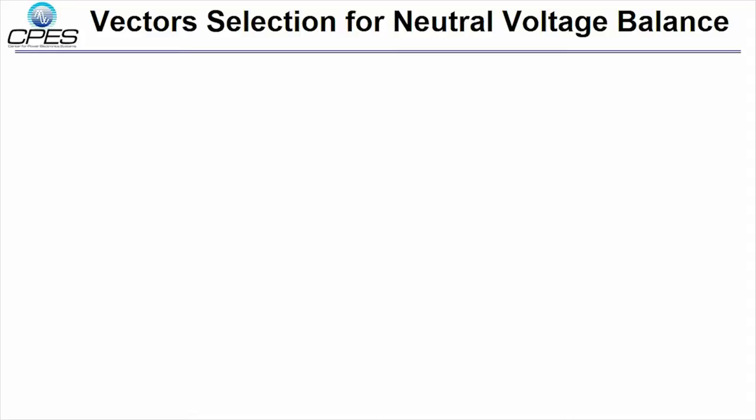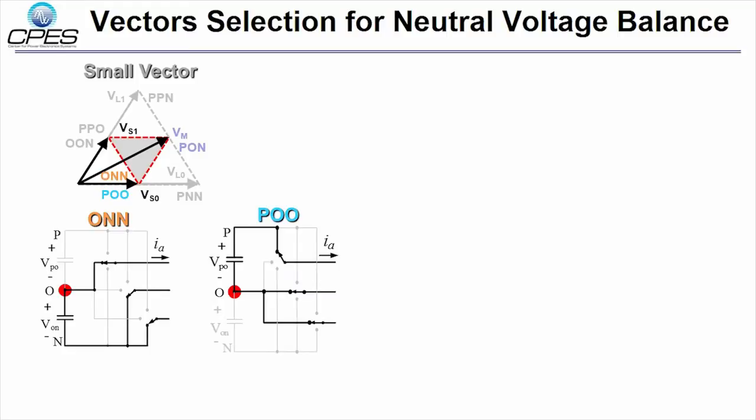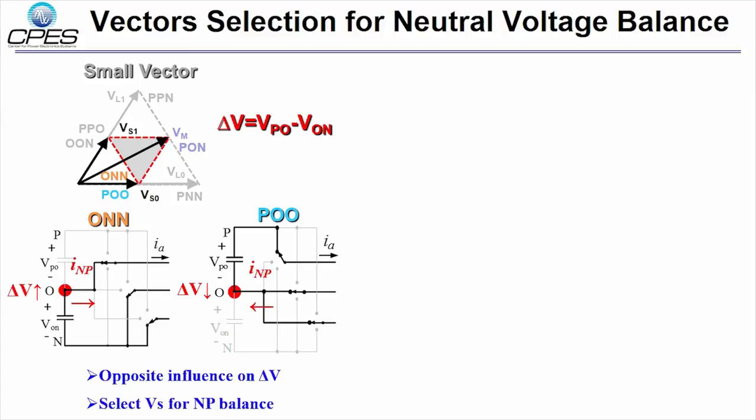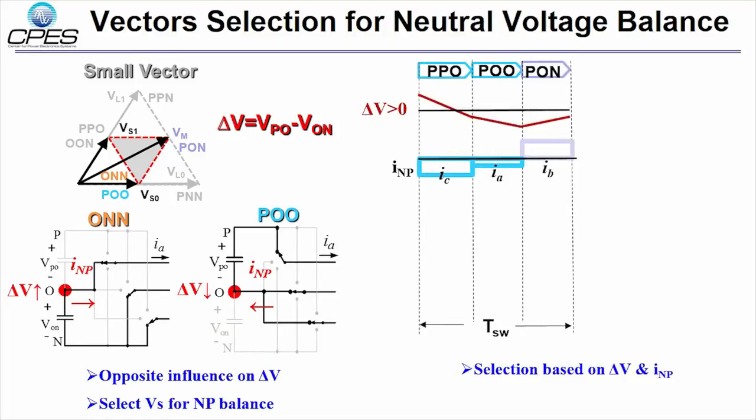Neutral point voltage balance is critical to the 3-level converter. Small vectors are used to balance the NP voltage. With NP voltage imbalance defined, the two switching states for one small vector have opposite neutral voltage and current. The opposite influence on the neutral voltage is selected for NP balance, and the selection is based on the neutral current and voltage feedback.